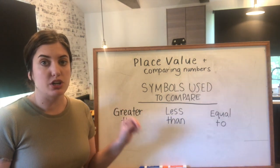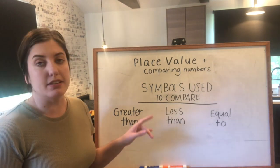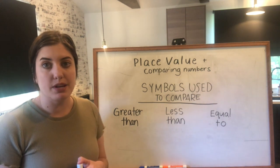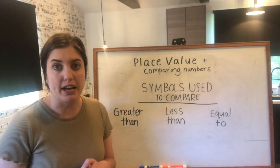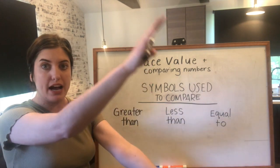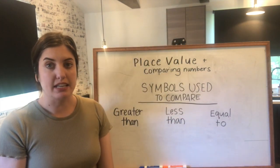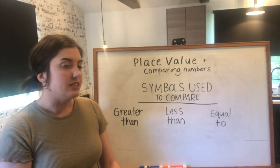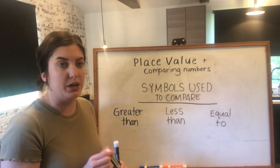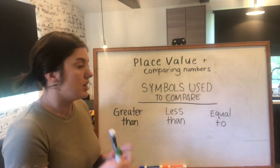Before we start making our place value charts and comparing numbers, let's talk about the symbols that are used to compare. We've talked about these before at school — do you remember our alligator and our greater than and less than? I'll use a green marker because that represents our alligator.